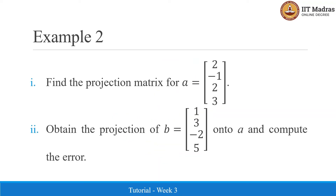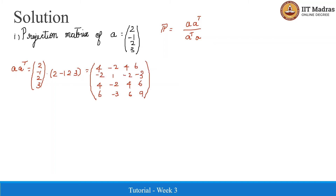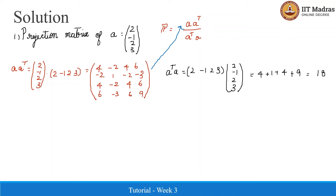In this example, for a given vector a, we will first find the projection matrix, then obtain the projection of another vector b onto a, and compute the error. The projection matrix P is equal to a times a-transpose divided by a-transpose times a. We find a times a-transpose and also a-transpose times a, which equals 18. From these we obtain the projection matrix P.